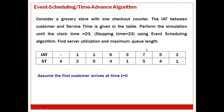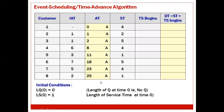Let us see how many columns are given: 1, 2, 3, 4, 5, 6, 7, 8 — so 8 customers are there. For the first customer there is no IIT. Even in the exam, if they don't give it in table form and just give IIT values like 1, 6, 3, 7, 5, 2 and ST values, we need a table with customer, IIT, and ST columns.